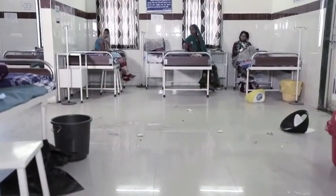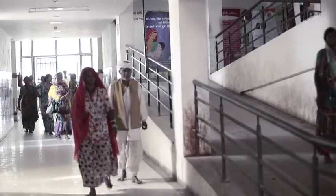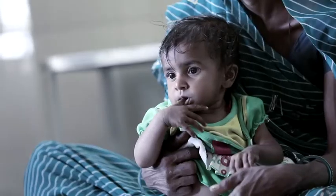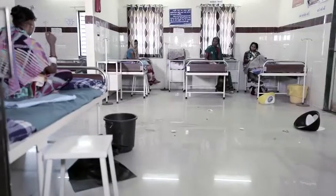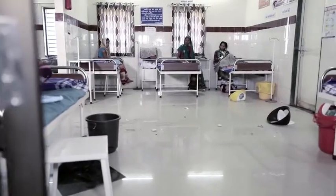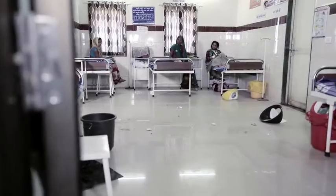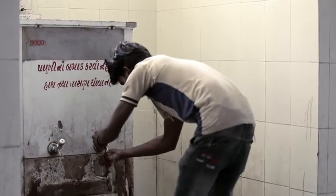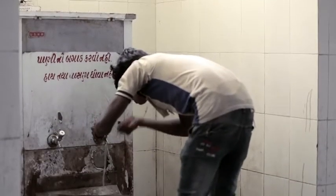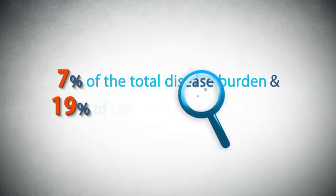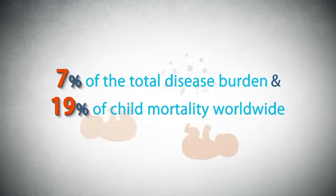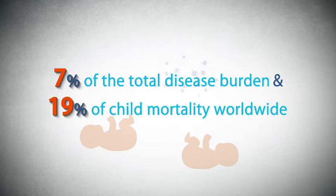Interventions in hygiene, sanitation and water are highly cost effective and capable of preventing a large part of this devastating disease burden. Poor hygiene, inadequate sanitation and insufficient and unsafe drinking water account for 7% of the total disease burden and 19% of child mortality worldwide.